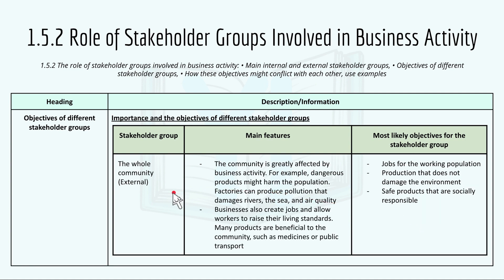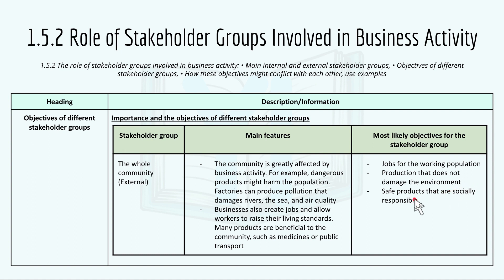The whole community is an external stakeholder group. The community is greatly affected by business activity — for example, dangerous products might harm the population, and factories can produce pollution that damages rivers, the sea, and air quality. On the other hand, businesses also create jobs and allow workers to raise their living standards, and many products are beneficial to the community, such as medicines or public transport. The community's objectives include jobs for the working population, production that does not damage the environment, and safe products that are socially responsible.